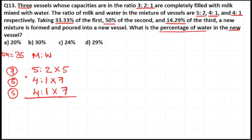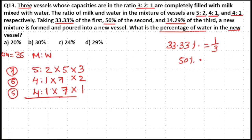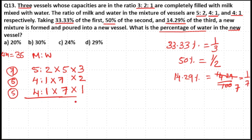Now total parts are equal. The three vessels whose capacities are in the ratio 3:2:1 — first vessel 3, second vessel 2, third vessel 1. Taking 33.33% of the first, which means 1/3; 50% means 1/2; and 14.29% is approximately 1/7. That means taking 1/3 of the first part, 1/2 of the second, and 1/7 of the third.